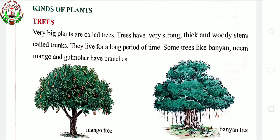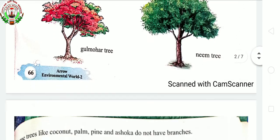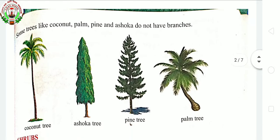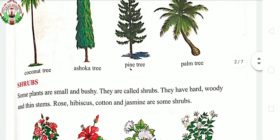We have seen kinds of plants. First, trees. Trees have very strong, thick and woody stems called trunks. Trees are very big plants and live for a longer period of time. Some trees have branches, such as mango and banyan tree. But there can be some trees which do not have branches, like coconut and palm tree.